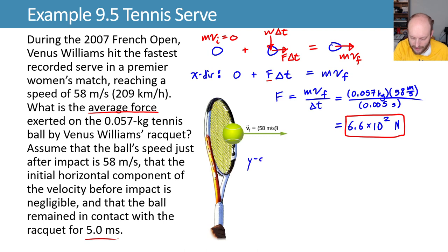If we look at the y-direction version, what we start off is we still have no momentum initially, and then we have, if I'm calling down positive, we have weight times delta t equaling zero.